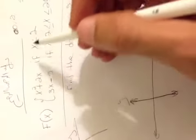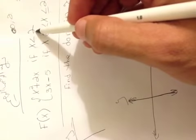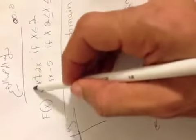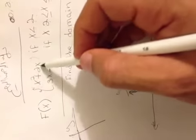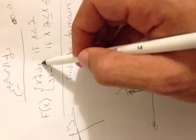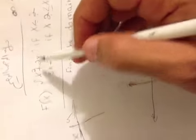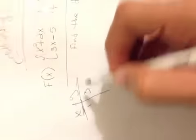And if we replace the X by 1, we look here, it's smaller than 2, so we're going to use the first one. 1 to the second power is 1, 2 times 1 is 2, so 1 plus 2 is 3. So here, 3 and 1.